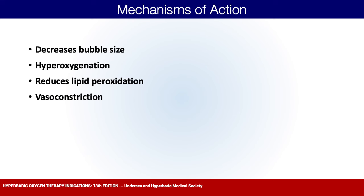Vasoconstriction sounds counterintuitive — blood vessels are going to shrink — but at certain pressures the vasoconstriction is significant and can do a lot for somebody with edema or swelling, especially in an acute injury. You're still going to deliver a high level of oxygen whether there's vasoconstriction or not, but the vasoconstriction can really minimize swelling or inflammation in an area.